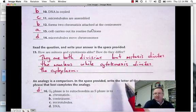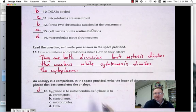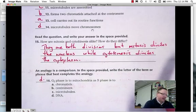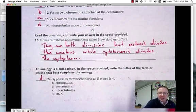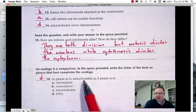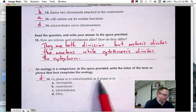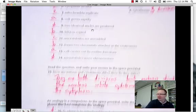Mitosis and cytokinesis are alike in some ways, but also different. They're both divisions, so that's a similarity. But mitosis divides the nucleus, while cytokinesis divides the cytoplasm. So that's the major difference. And then lastly, G2 phase is to mitochondria, as the S phase is to DNA. During the G2 phase, the mitochondria are replicated. During the S phase, the DNA is replicated. All right, so those are some of the major events of the cell cycle.